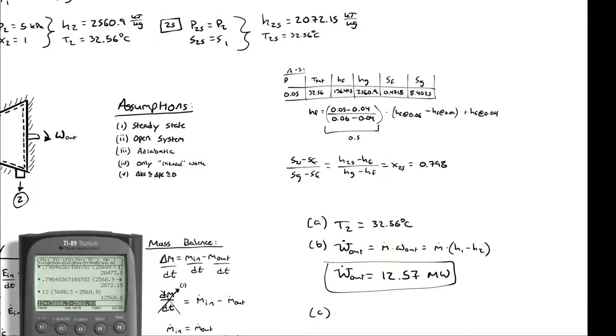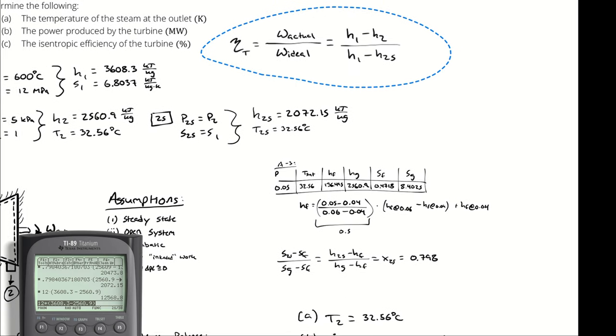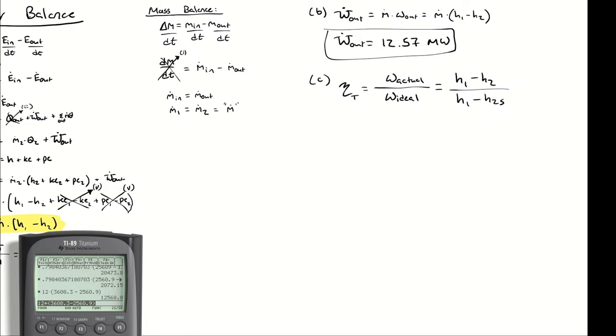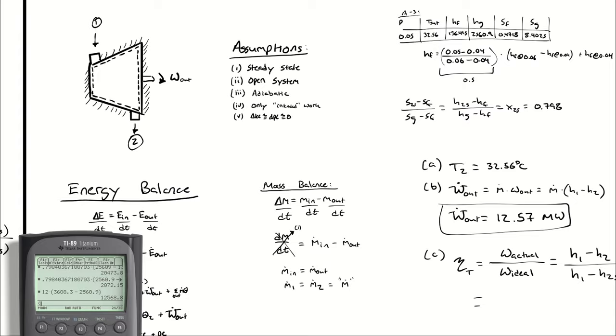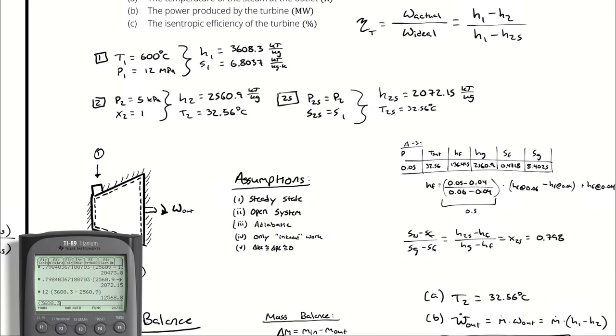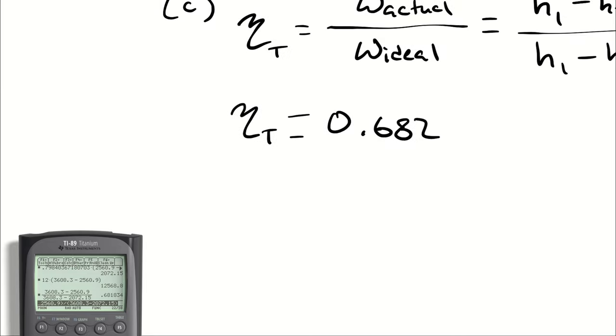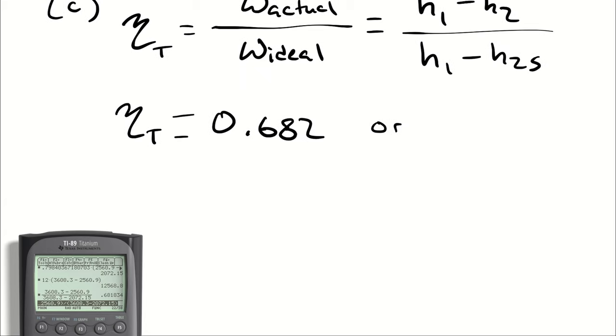And for part c, I'm going to drag this down. Well, actually just copy and paste. So I have H1 minus H2 divided by H1 minus H2S, so that will be 3608.3 minus 2560.9 divided by 3608.3 minus 2072.15, so my isentropic efficiency of my turbine is 0.682 or 68.2 percent.